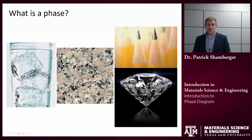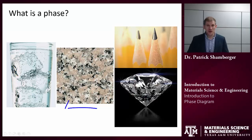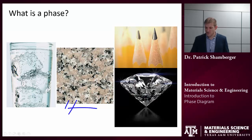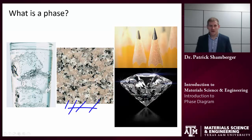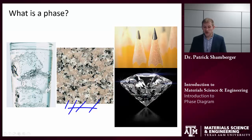Phases could also have different compositions. If we look at granite, you have at least four different phases: a pink feldspar, a milky white feldspar, a grayish quartz, and little black flecks of biotite. These all have four different chemical compositions and their crystal structures are also different. Each one has its own unique set of properties — for example, the thermal conductivity of quartz is different from that of feldspar.